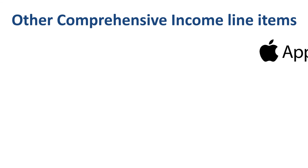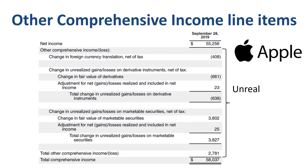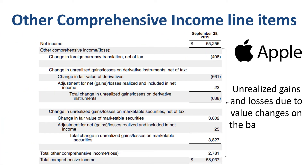The size of the numbers by line item is highly dependent on the composition of the balance sheet. For example, if like Apple you have a lot of marketable securities, then the change in unrealized gains and losses on marketable securities is potentially also very large.